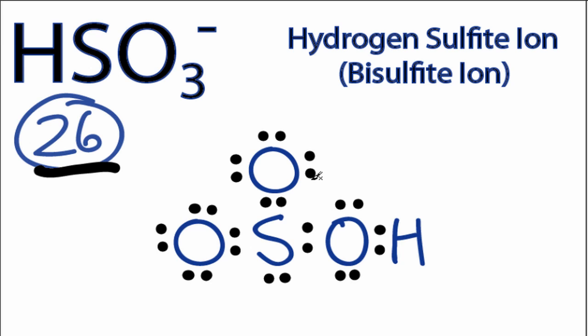At this point the sulfur has eight valence electrons, the oxygens each have eight, so their octets are full. Hydrogen has two, so its outer shell is full as well. So this looks like a pretty good structure.